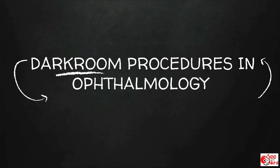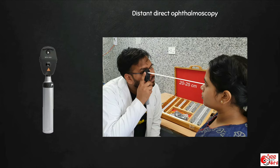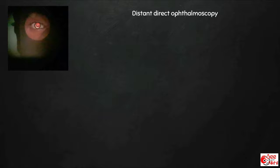Coming to dark room procedures in ophthalmology — I will discuss this as an approach to a patient presenting in OPD. Please note that these procedures are performed in a dark room or semi-dark room; the lights are on in the videos for demonstration purposes only. When a patient presents with decrease in vision, first a distant direct ophthalmoscopy is done using a direct ophthalmoscope at a distance of 20–25 cm to assess the state of the fundus and detect any opacities in ocular media.